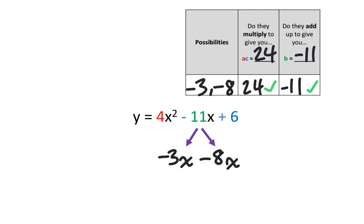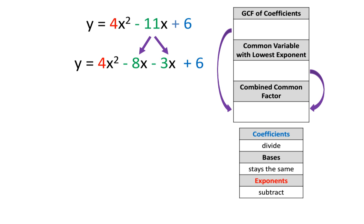This process is called decomposition because the center term, negative 11x, is going to be decomposed — meaning we're going to break it down into smaller pieces. I'm going to break it down into negative 3x and negative 8x. Everything else stays the same: the y, the equal sign, the 4x squared, and the positive 6. We've decomposed negative 11x into negative 8x and negative 3x. The order of these two terms doesn't actually matter. We're going to group these four terms into smaller groups.